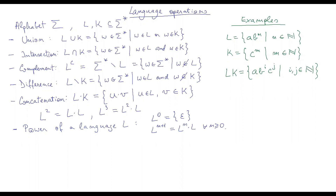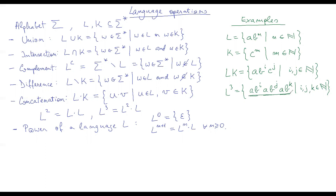Continuing the example, L³ consists of all words of the form (ab^i)(ab^j)(ab^k) for all natural numbers i, j, k. One thing to avoid is the temptation to think i must equal j must equal k. According to the definition you are allowed to take any word from L, followed by any word from L, followed by any word from L independently — that is your L to the power 3.